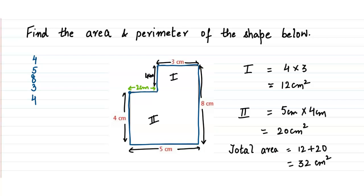Then I go this side and add another three, come down and add four, then go this way and add two. When I add them up: four plus five is nine, nine plus eight is 17, 17 plus three is 20, plus four is 24, and plus two is 26. So 26 centimeters is the perimeter of this shape. I hope you enjoyed watching the video — thank you, goodbye!